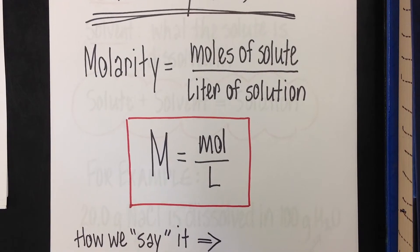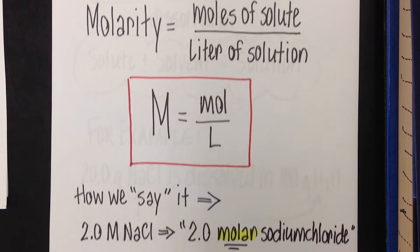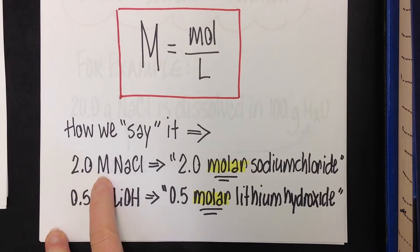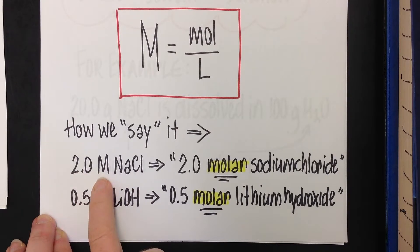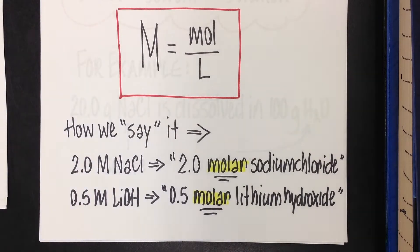When we're doing our math, molarity equals moles per liter. When you get an answer, or maybe you're in the lab and you see a bottle that's labeled, you may see a label like '2.0 M NaCl.' We would say this as '2.0 molar sodium chloride.' Here's another example: 0.5 molar lithium hydroxide. When you see that capital M on a label or as a unit in an answer, the word that comes out of your mouth is 'molar.'